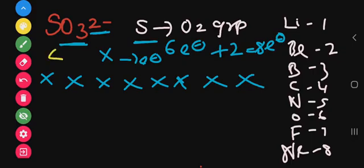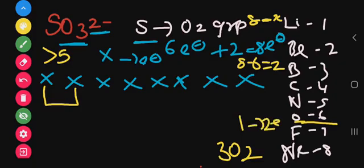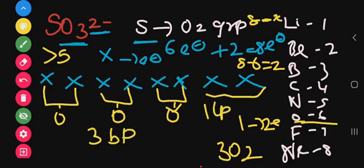Since oxygen's valence is greater than 5, we use 8 minus 6 = 2 electrons per oxygen bond. With 3 oxygens, each contributing 2 electrons, and the remaining electrons forming 1 lone pair, we get 3 bond pairs and 1 lone pair — giving 4 pairs total.